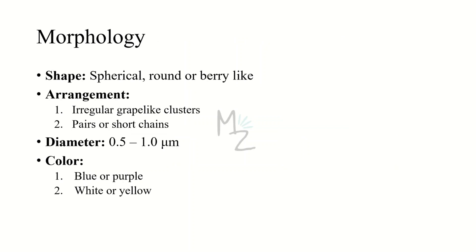Morphology — shape: it is spherical, round, or berry-like, arranged in irregular grape-like clusters. It may occur in pairs or short chains, but for epidermidis it mainly occurs in pairs, sometimes in short chains. Its diameter varies from 0.5 to 1 micrometer. Its color varies depending on the stain — blue or purple since it is gram-positive, and white or yellow depending on whether it is coagulase positive or negative.